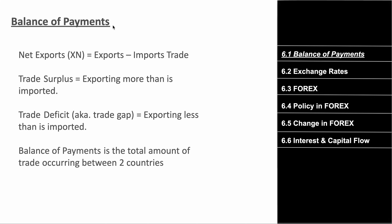The balance of payments measures trade between two different countries. First, let's understand trade in general. You can have a trade surplus and a trade deficit — similar to budget surplus and deficit from Unit 5. A trade surplus is when you're exporting more than you're importing. A trade deficit is when you're importing more than you're exporting. Net exports — from the GDP formula — is exports minus imports.